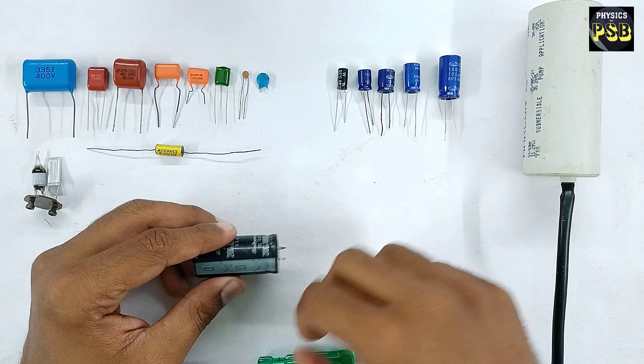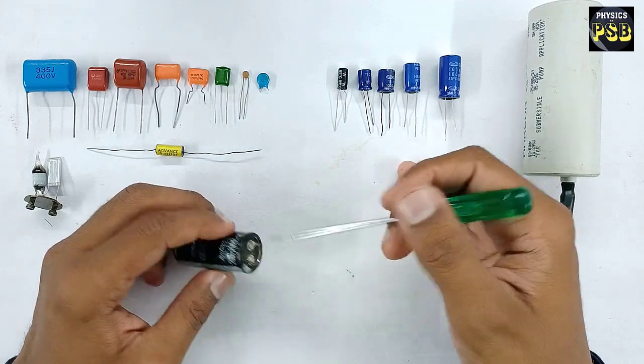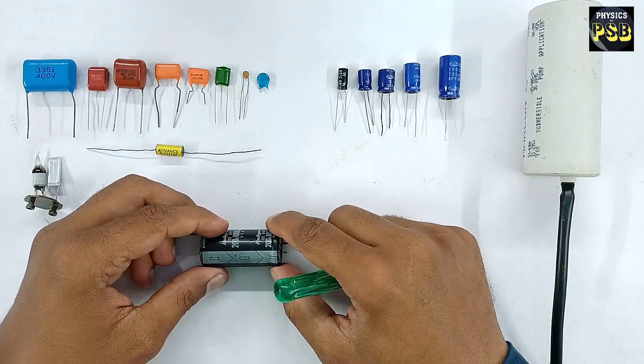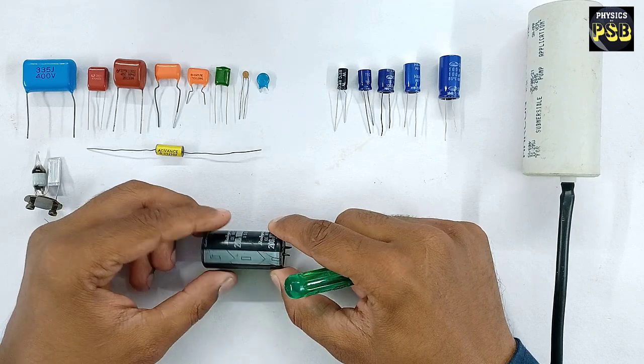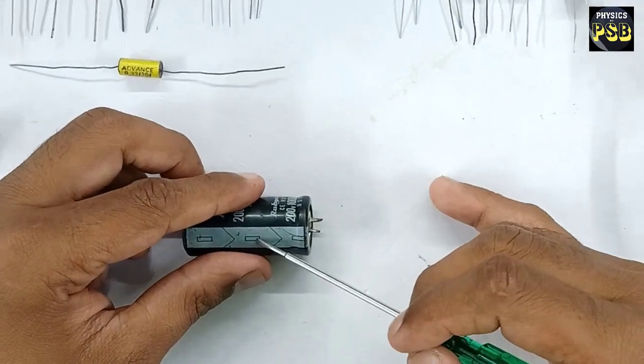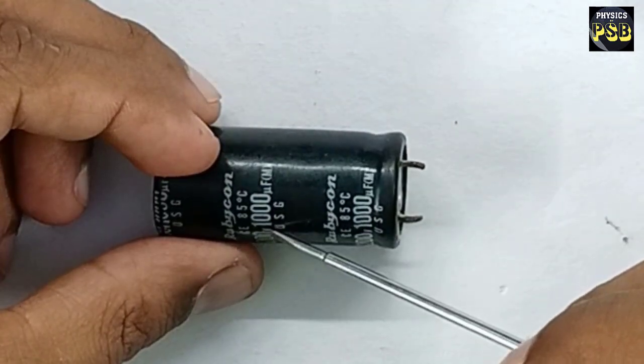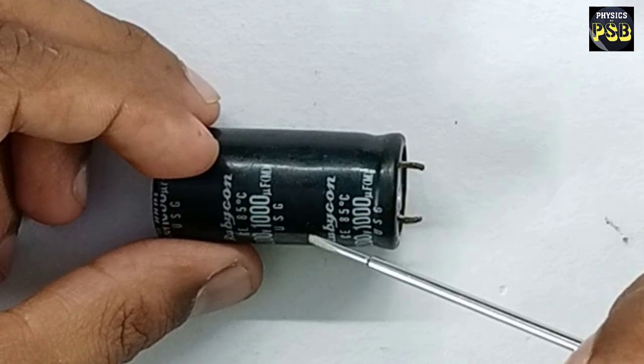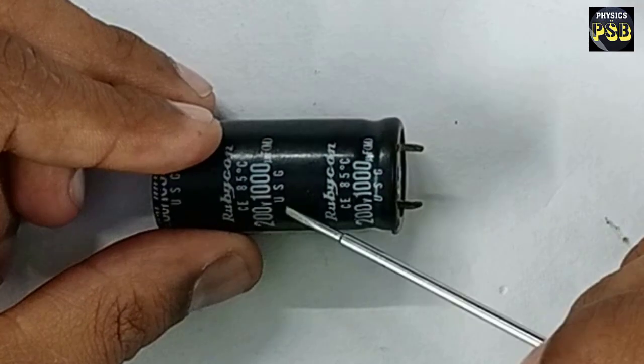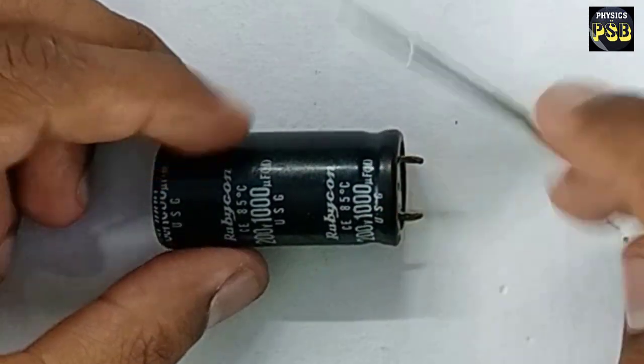Polar capacitors have negative and positive terminals. The capacitor I hold in my hand is called an electrolytic capacitor. You may find a minus sign mentioned beside this terminal. The body of this electrolytic capacitor shows the capacitance with the voltage rating. This kind of capacitor, which has polarity, is used in DC circuits.